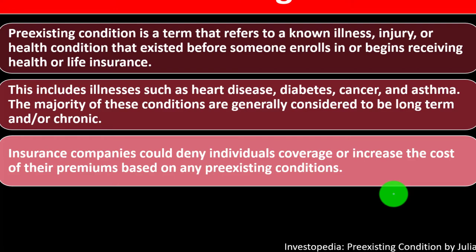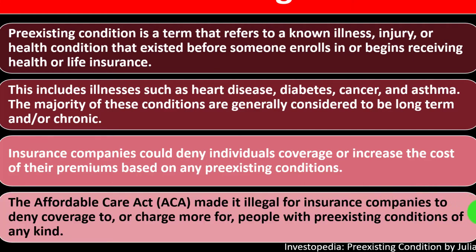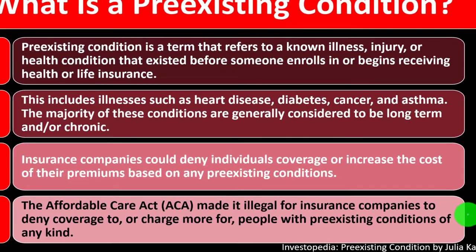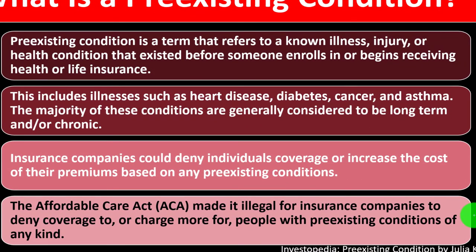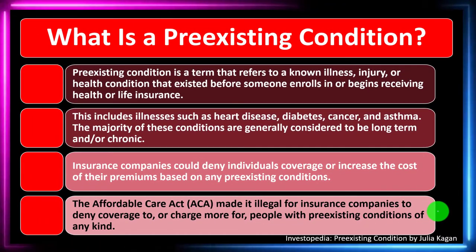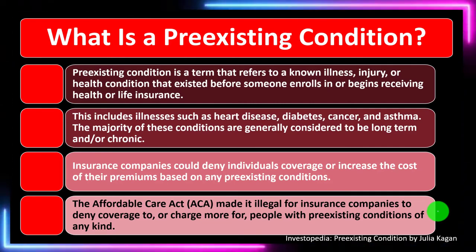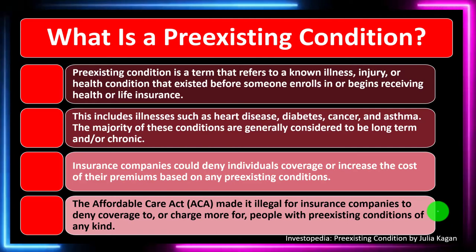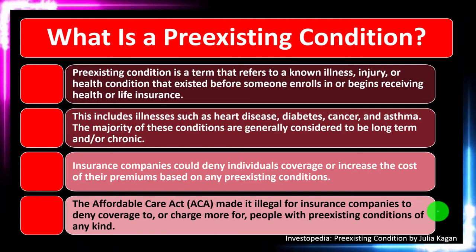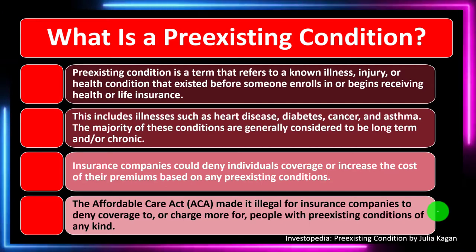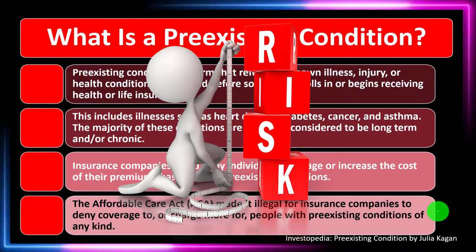Insurance companies could deny individuals coverage or increase the cost of their premiums based on any pre-existing conditions. The Affordable Care Act — otherwise known as the ACA — made it illegal for insurance companies to deny coverage to, or charge more for, people with pre-existing conditions of any kind. That could be seen as a good thing because we want more people to get coverage, but it also changes the math — those premiums are going to have to be covered some other way because the whole risk calculation has changed.